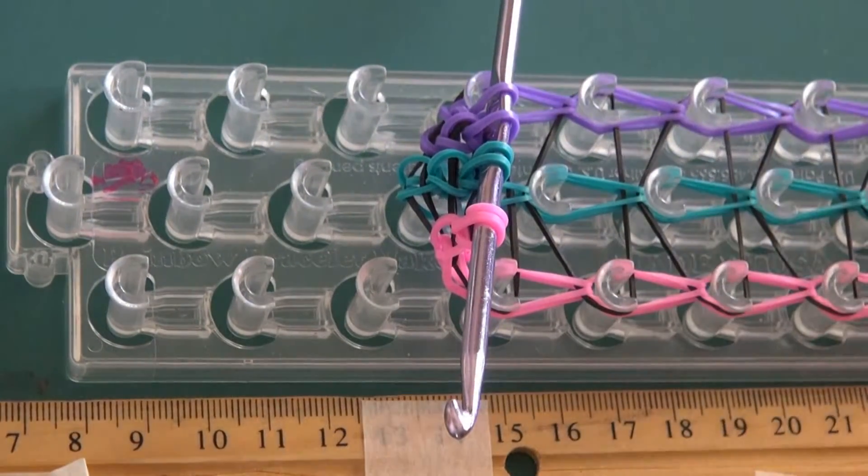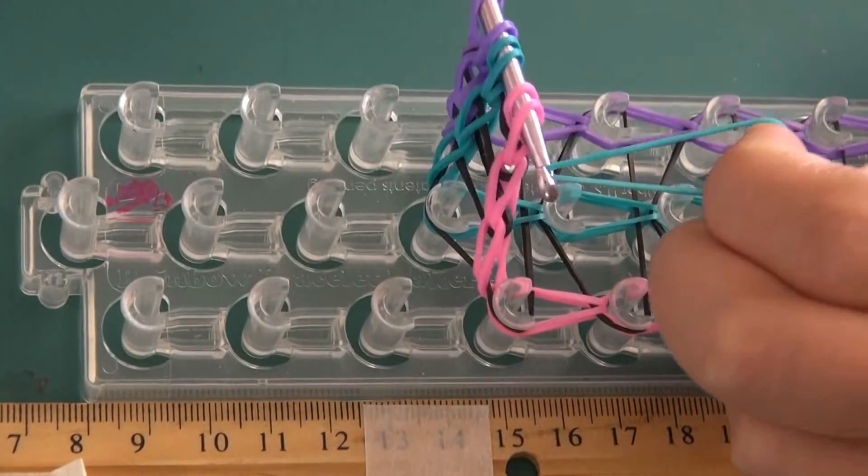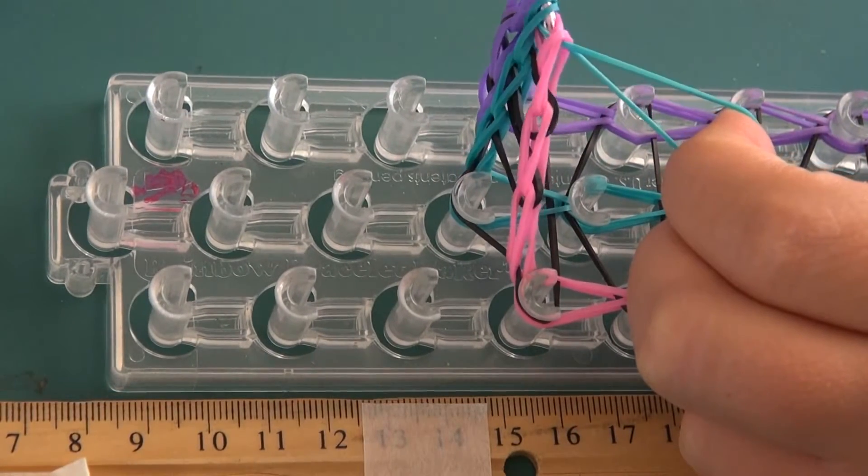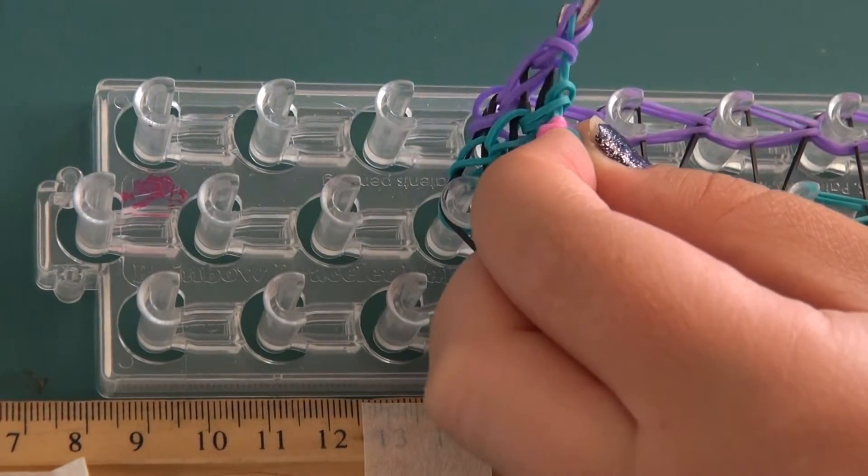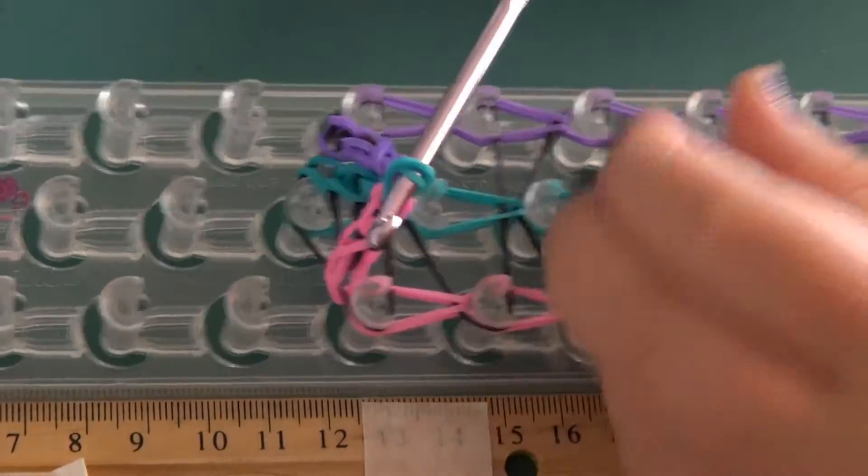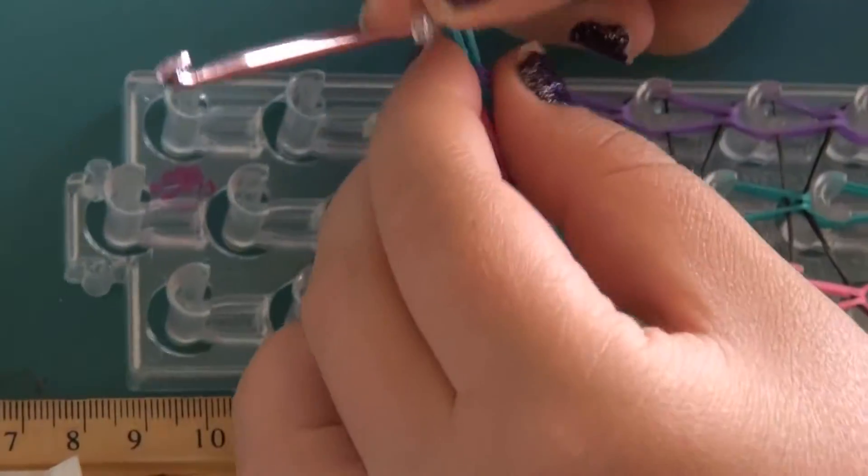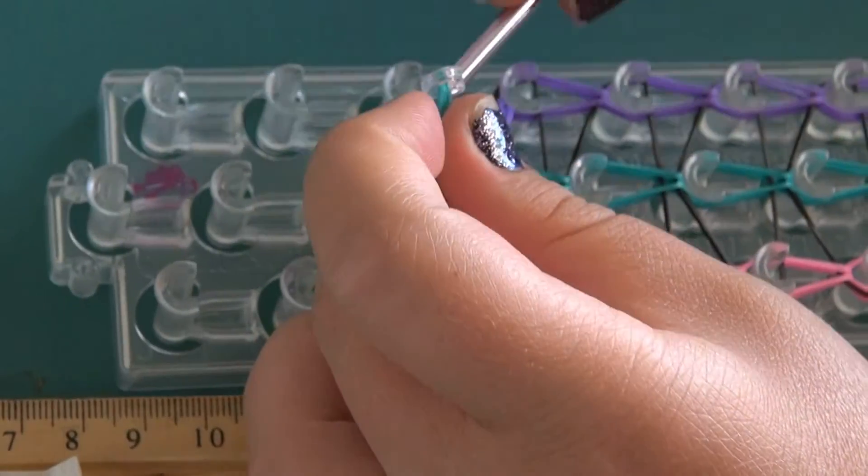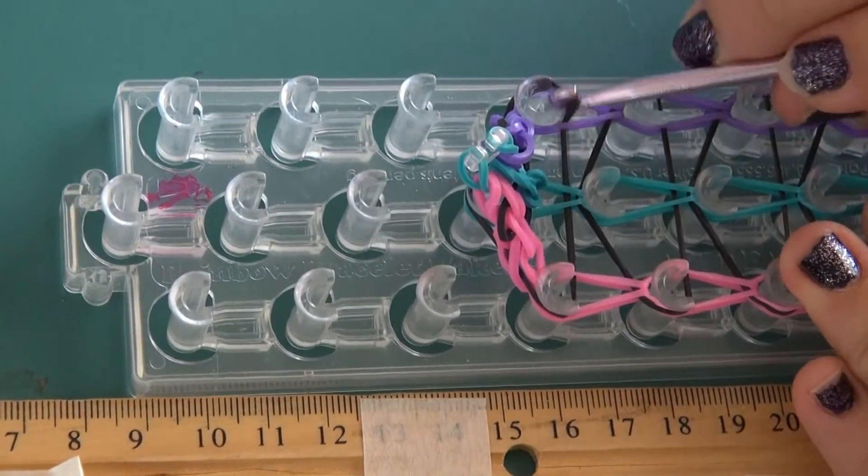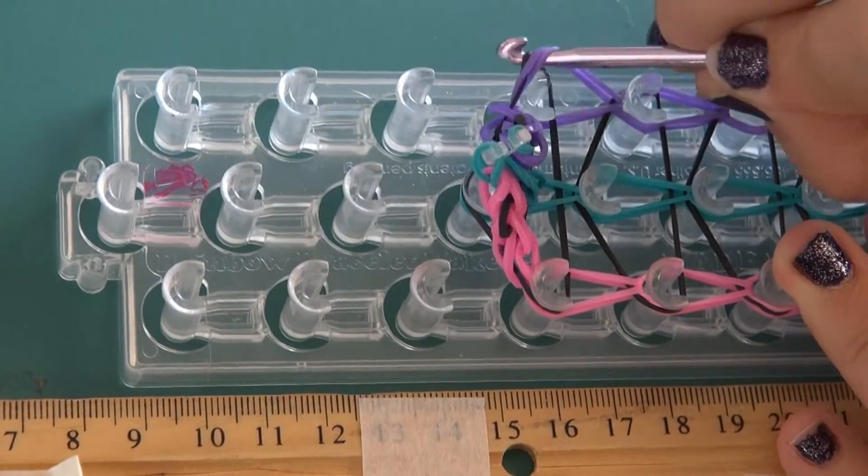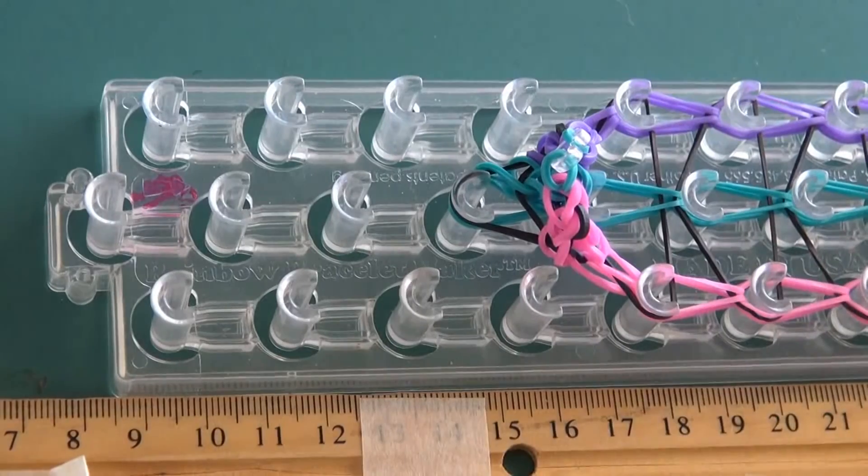And we will secure the end so we can undo the whole loom. So now we need another band and we pull it through like that. And then we place the other side on our hook. And now we're going to hook this rubber band together so we can take it off. And it's hooked on there. And now we can continue taking the bands off the loom. You want to carefully pull them off so you do not rip a band.